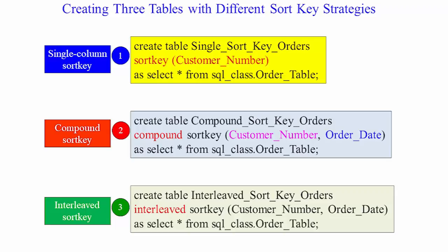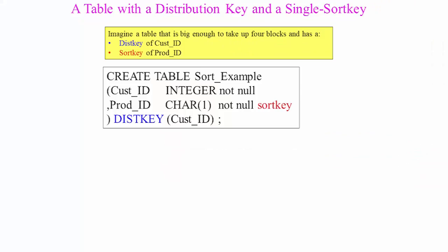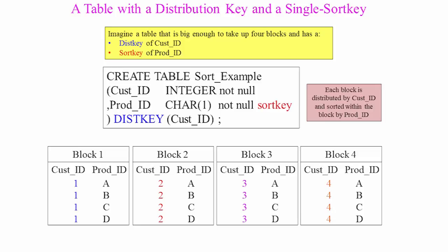Now, we're going to have a single sort key. Take a look at our table here. It's called Create Table Sort Example. It's got a customer ID and a product ID, cust ID and product ID, prod ID. Now, we're going to put the sort key on prod ID. So, when the data lays out to the different slices, each one of them gets a different cust ID because it was distributed on that.